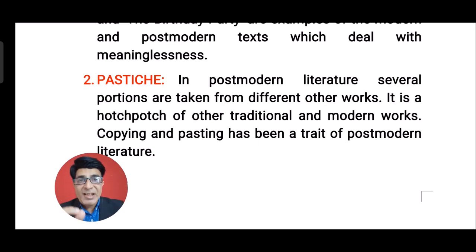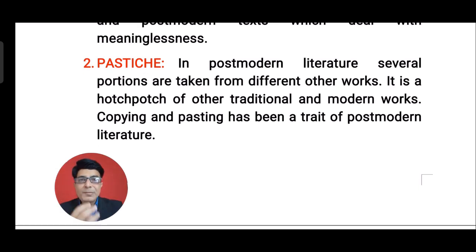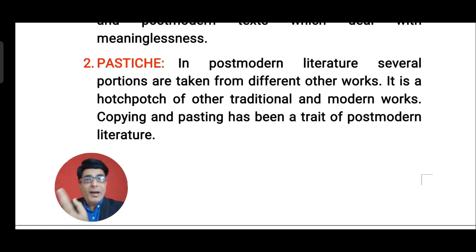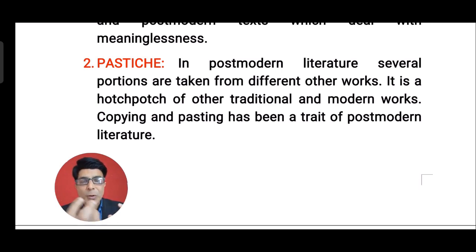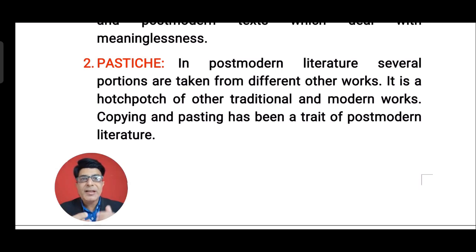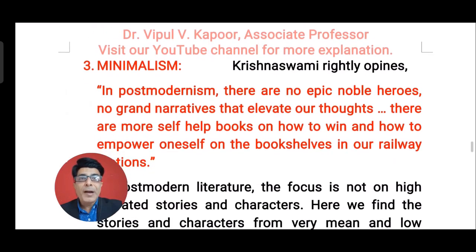Number two is pastiche. In postmodern literature, sometimes portions are taken from different other texts — the author copies and pastes these portions from other writers and other texts. So postmodern work of art is a kind of hodgepodge, a mixture of traditional and modern works. Copying and pasting has been a tradition in postmodern times, and you find this element throughout postmodern literature.